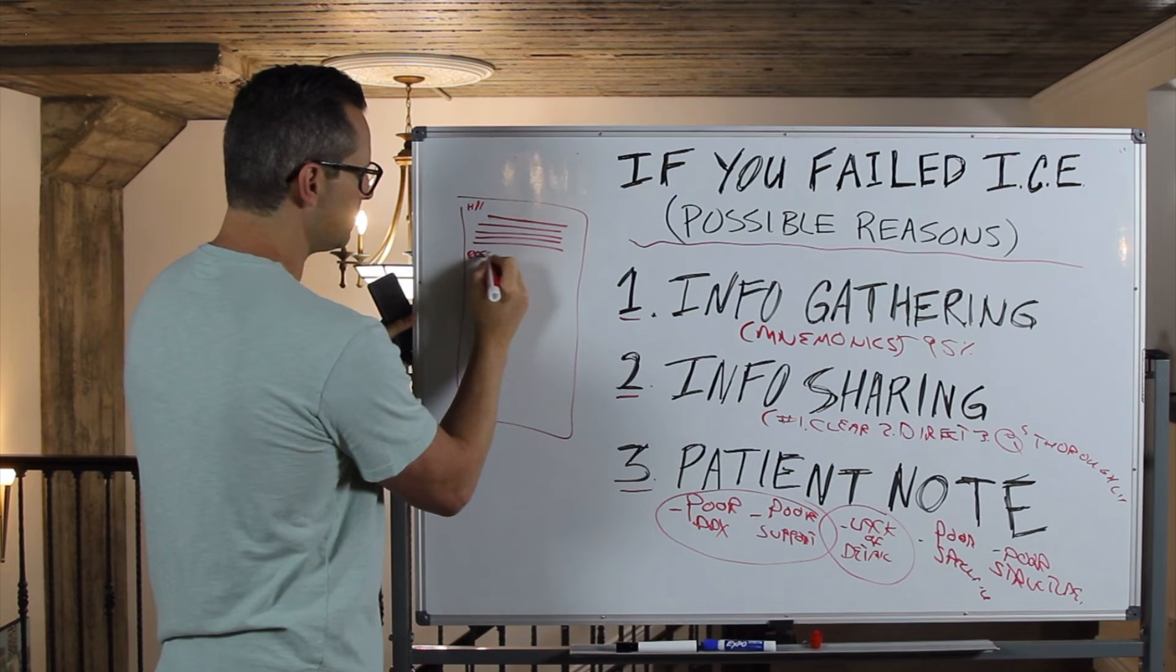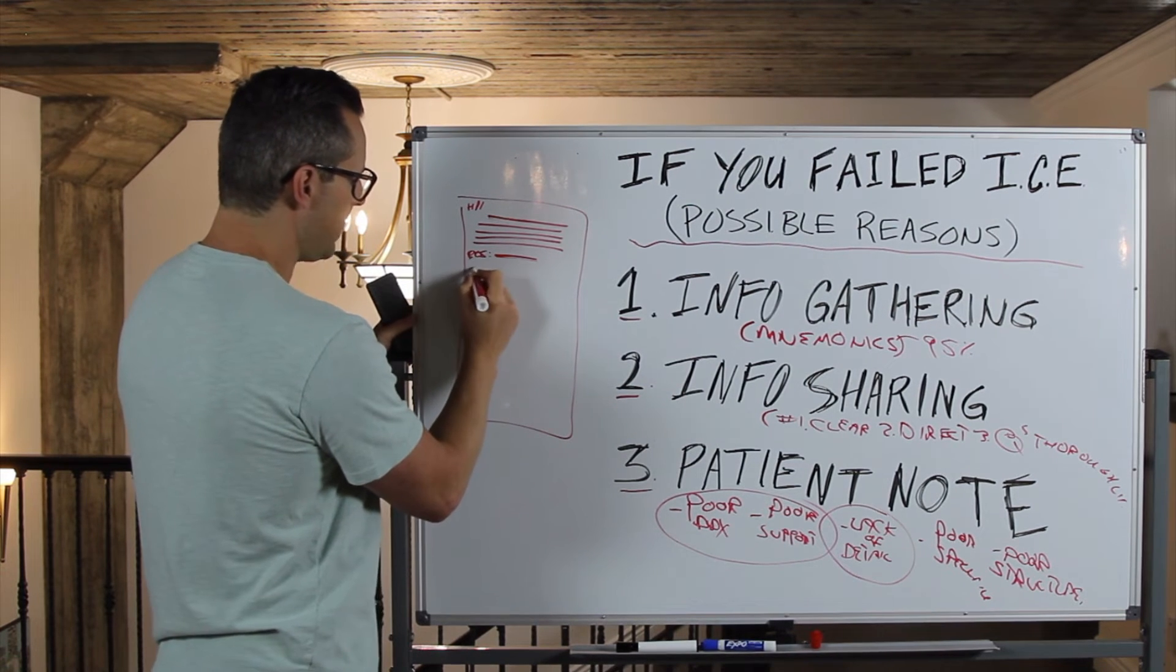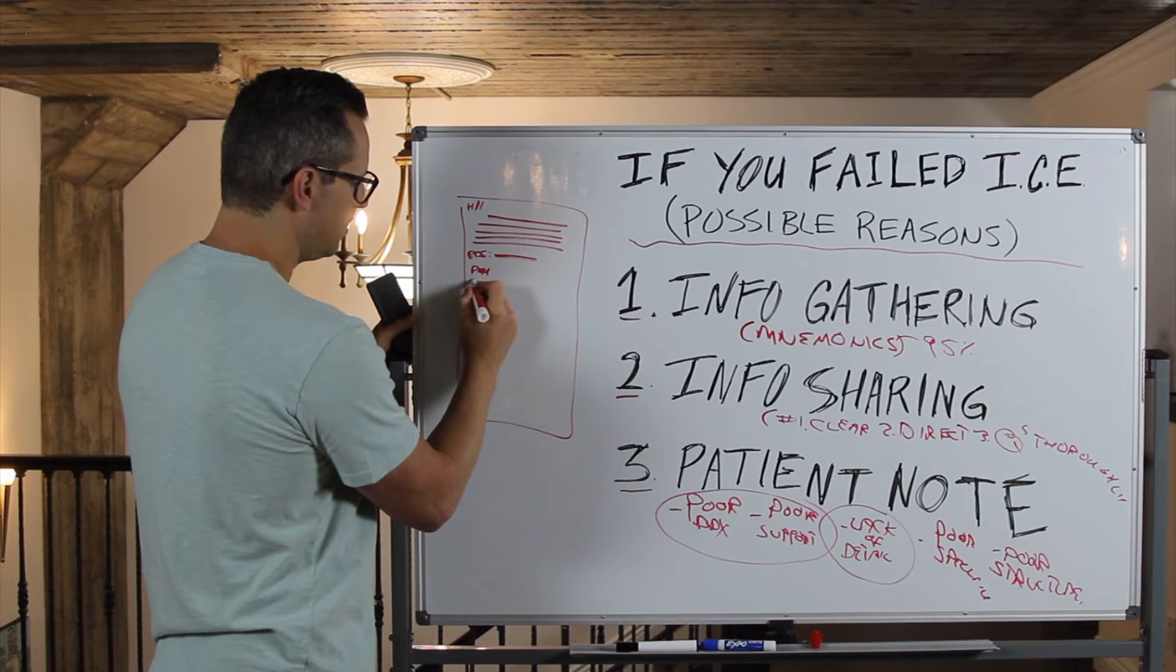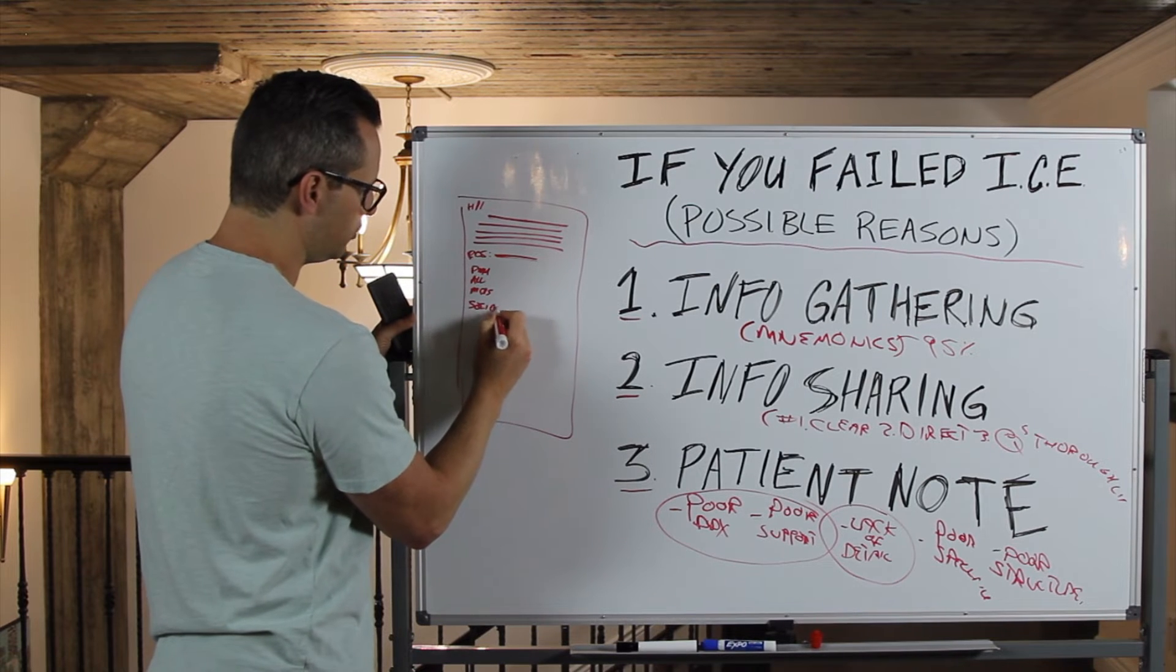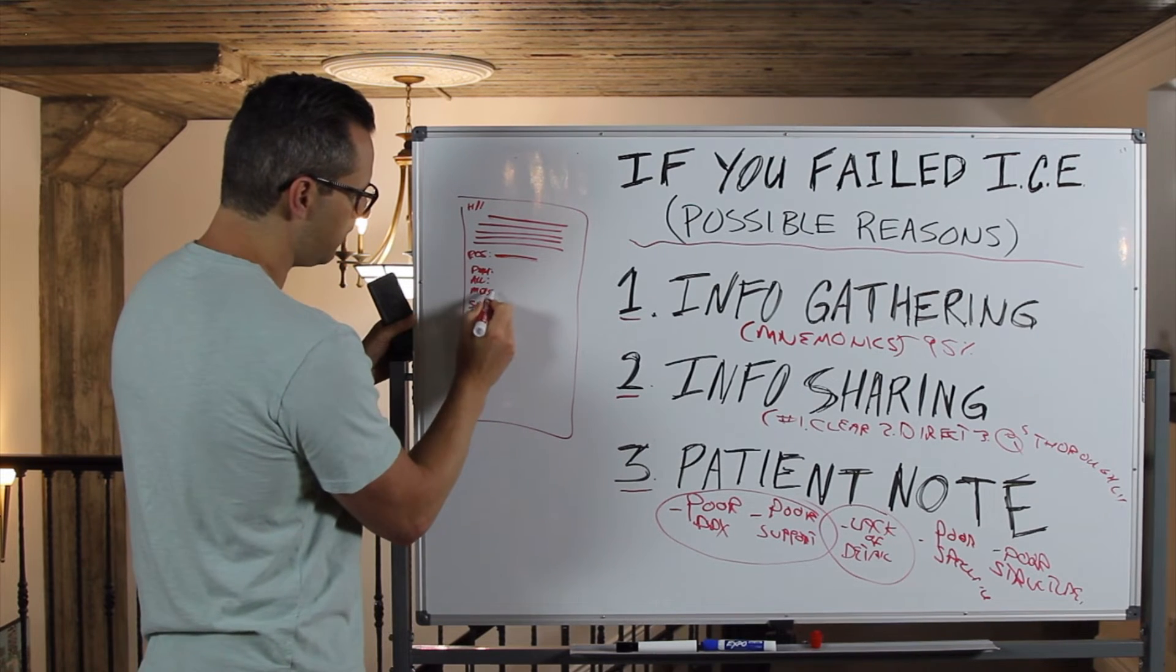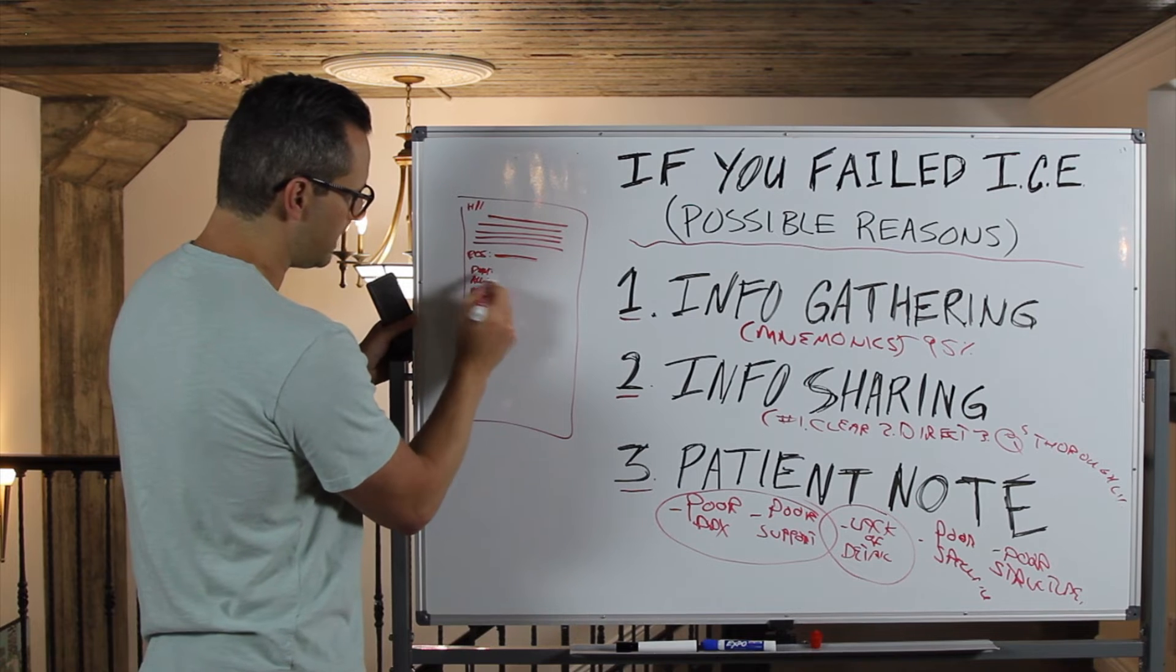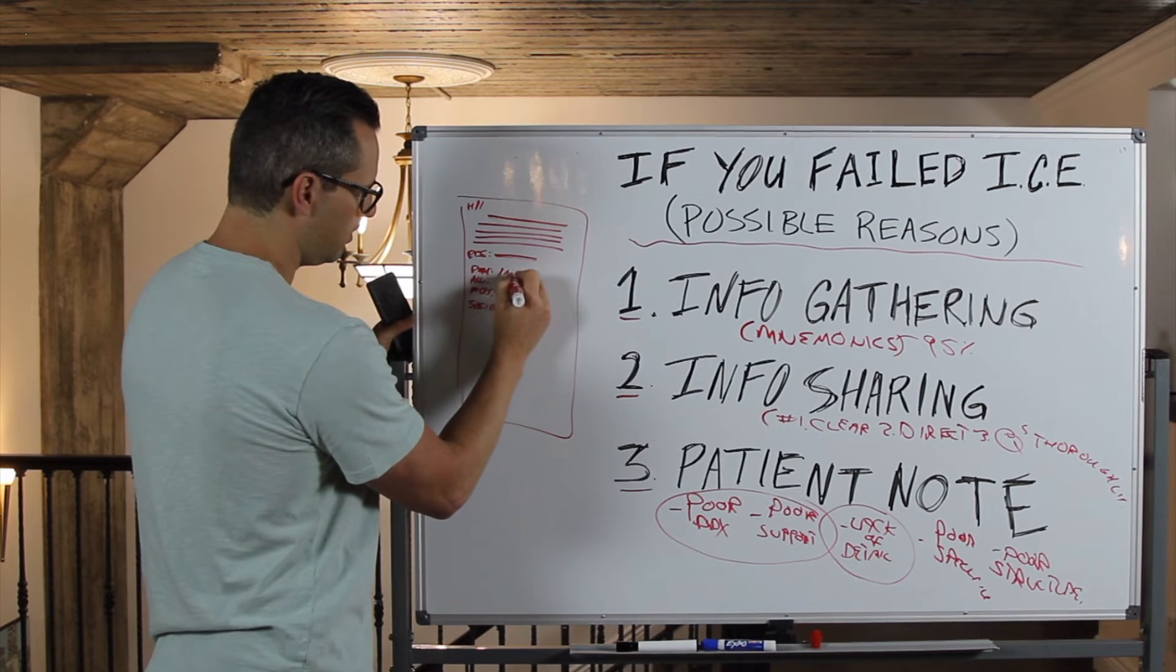Then your review of systems. You want it to be nice and neat, okay? Then your past medical. All of this information, okay? What you should do is you should preface all of this information, meaning you put past medical history, colon, info.